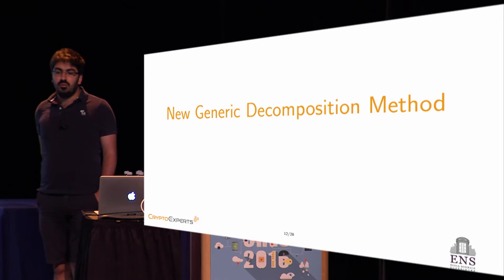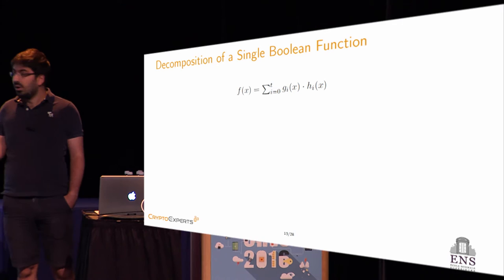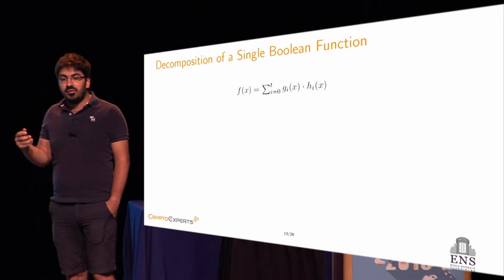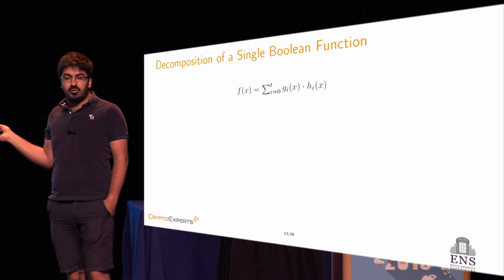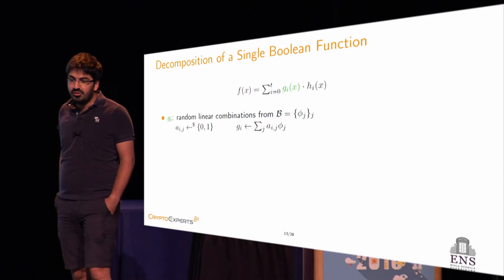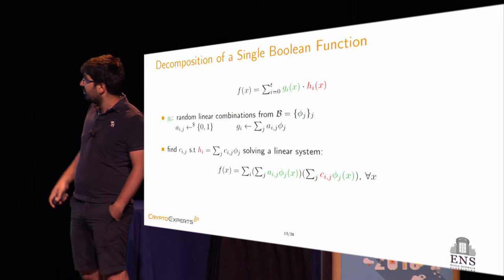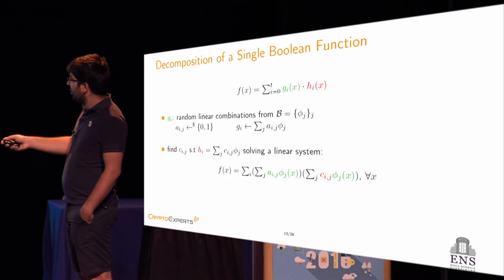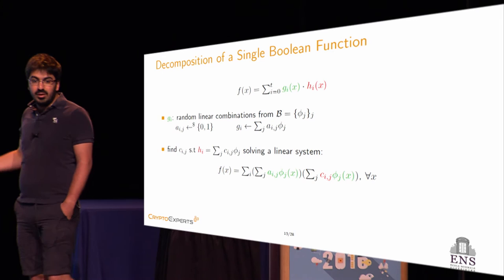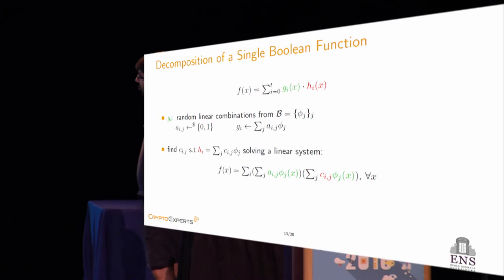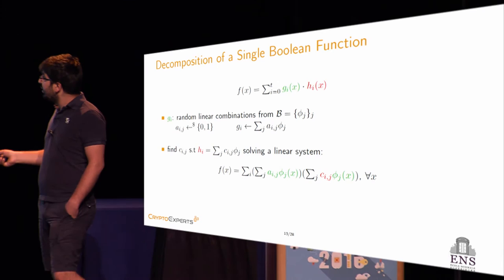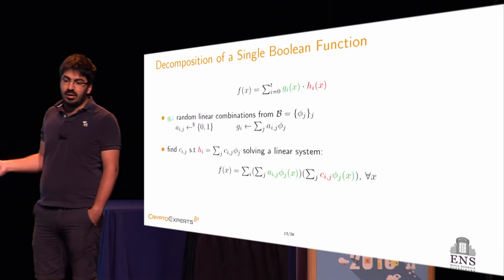I will now describe this new generic decomposition method. How to decompose a single Boolean function? Let F be a Boolean function. We can represent F as the sum of T+1 products of Boolean functions G and H. To generate such a decomposition, we take the G_i as random linear combinations from a known basis B, and then the goal is to find the coefficients of H — the c_{A,G} — under its representation with the basis B, by solving a linear system where we evaluate the Boolean function on every point.